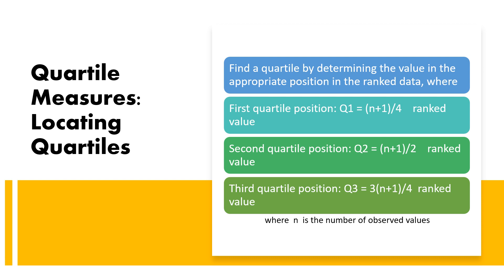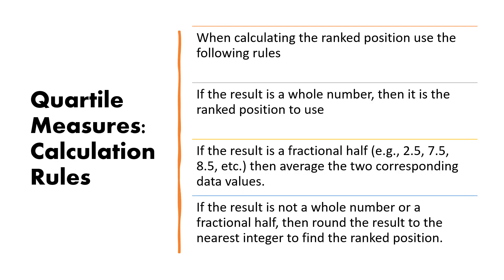Calculation rules for quartile positions: if the result is a whole number, use that as the rank position. If the result is a fractional half, average the two corresponding data values. If the result is neither a whole number nor a fractional half, round to the nearest integer to find the ranked position.